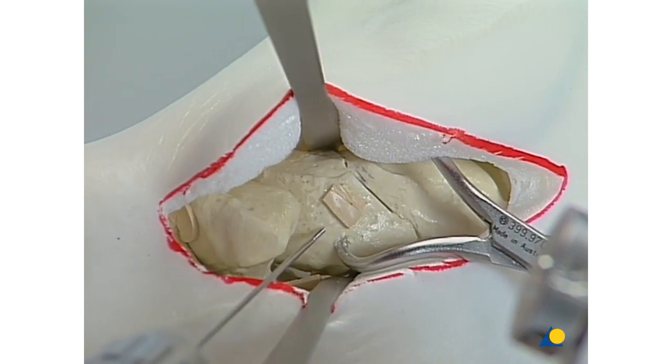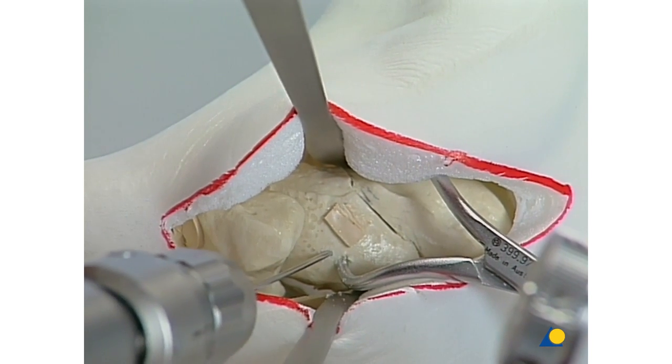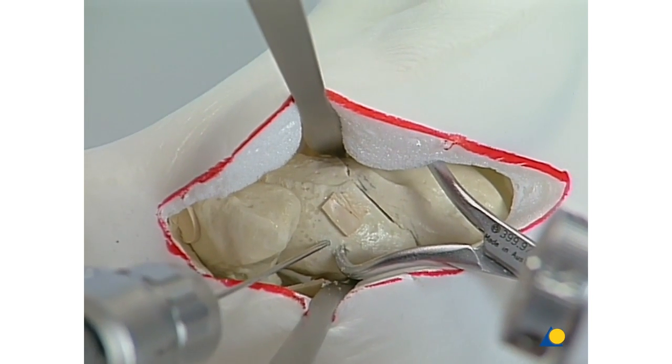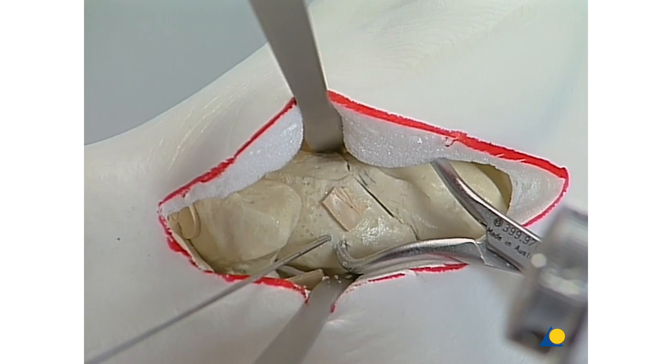After reduction of the fracture on the medial aspect of the bone, fixation of the fracture is obtained using the threaded 1.6mm K wire. After this fixation the leg is rotated.